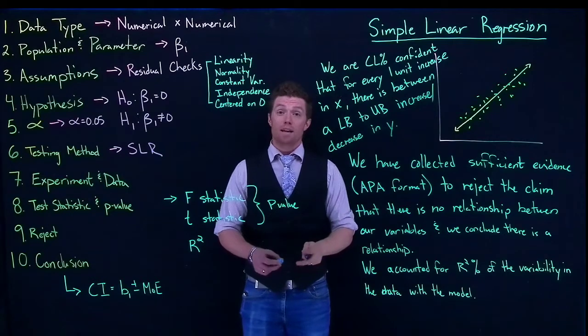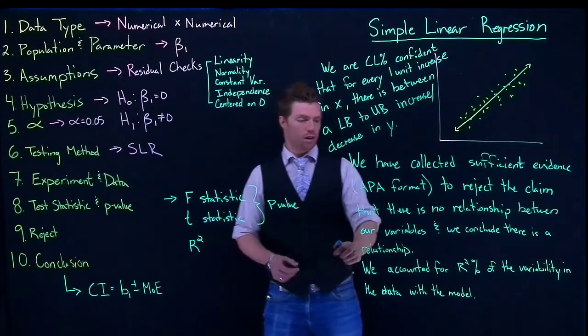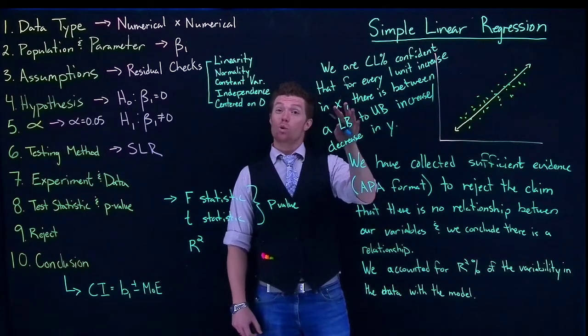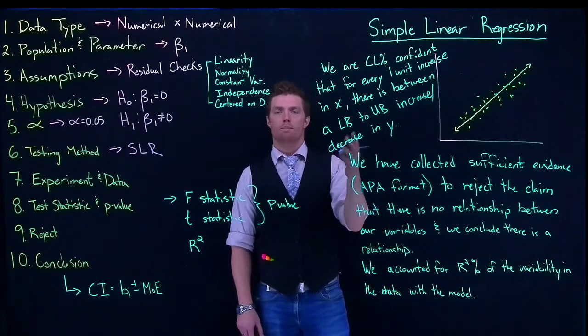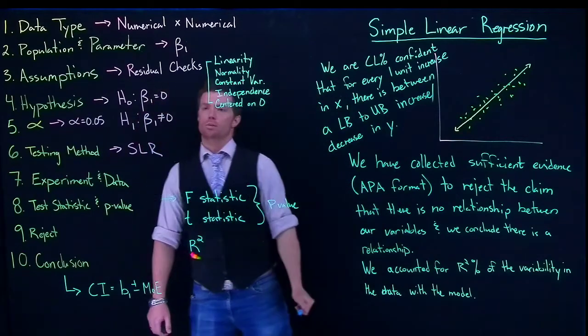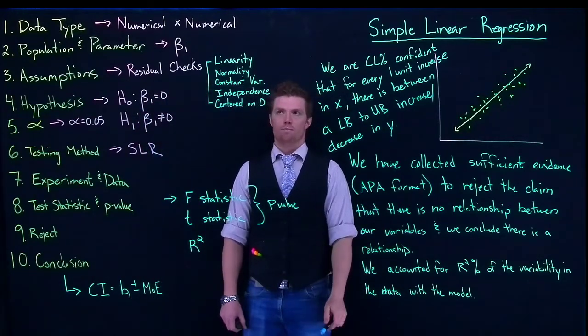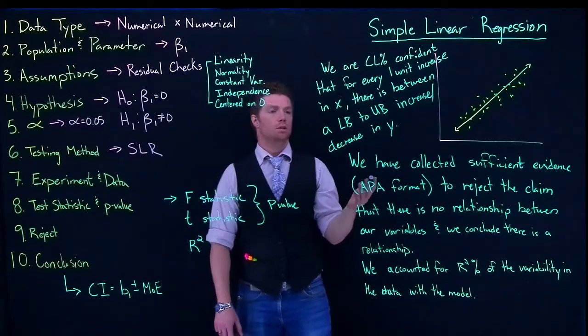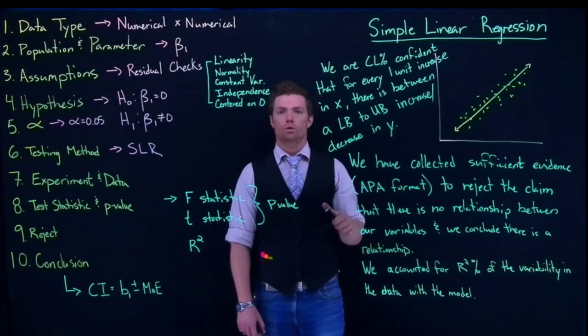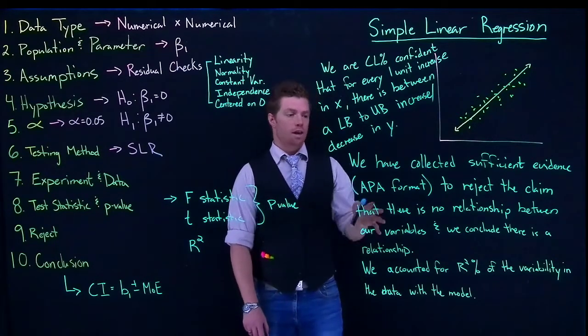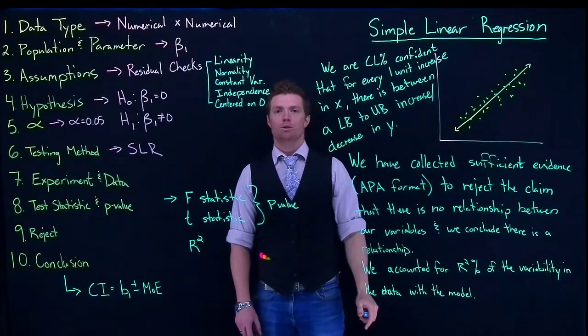So we basically have one new thing. We've got to include this coefficient of determination. And then we kind of tweak how we talk about our confidence interval to be able to make sure that we understand this interpretation of our slope. But this is basically the steps of how we do our hypothesis testing with simple linear regression. And we will do some examples with our software so that we can get specific values and then really get this into a specific format.